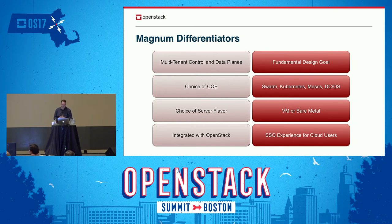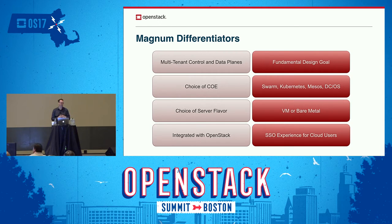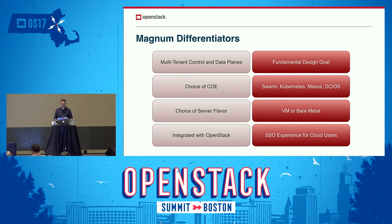The third differentiator is you can choose what kind of servers Nova gives you by changing your virt driver, and Magnum doesn't care. It will let you deploy clusters composed of bare metal servers, or clusters composed of virtual machines, or if your cloud is configured for it, clusters made of containers — containers within containers. Magnum supports VMs first since that's the default, as most people run a KVM virt driver in their OpenStack clouds, but it's designed to accommodate other server types as well.